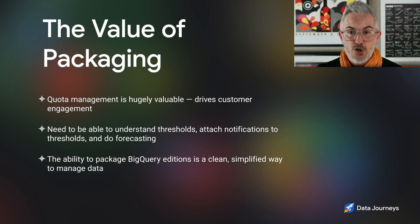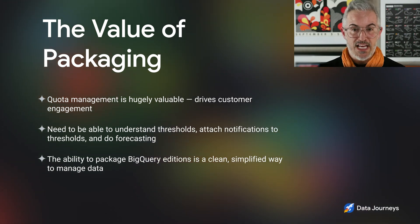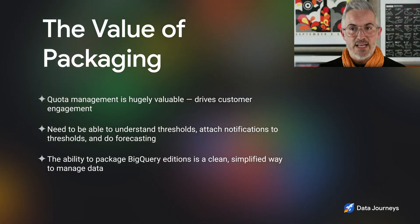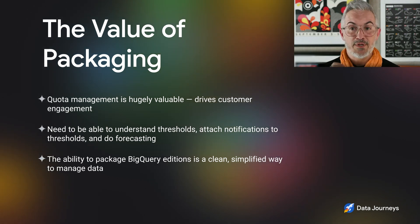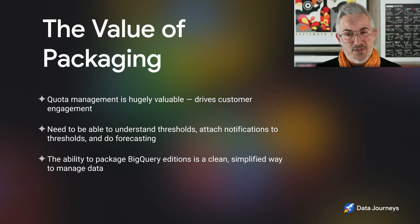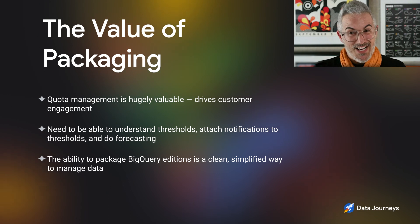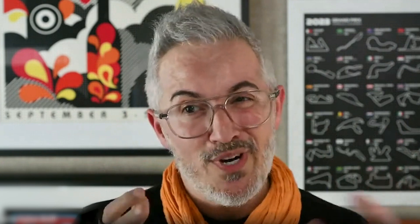Predictability is the first component. How do we think about the other dimensions, particularly how you're able to save money through additions? That's really for us about day-to-day management. Quota management for us has been hugely, hugely valuable, because that really drives our customer engagement. When we think about how we manage appropriate margins, we need to understand notifications, we need to understand thresholds, and we need notifications attached to thresholds — we need to be able to do forecasting. That actually makes our business work appropriately. Being able to package together all of the elements in additions is the most clean way for us to manage our day-to-day engagements with our customers. Historically it's been so much more complicated for us from an operational perspective.